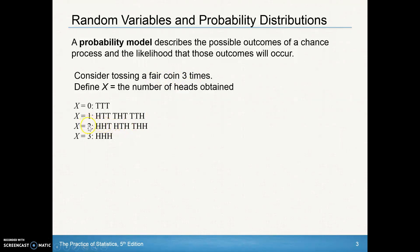We've also got two heads amongst the three flips of the coin. That could happen by going heads, heads, tails; heads, tails, heads; or tails, heads, heads. These are all unique outcomes because they all happen at different times. And then there's only one way to get three heads, and that's just getting heads, heads, heads. So we can see there are eight total unique outcomes in this whole probability model.